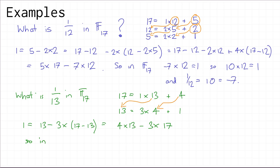So in the finite field with 17 elements, 4 times 13 equals 1 — we can ignore the minus 3 times 17 since 17 is 0. Therefore, 1 over 13 equals 4 in the finite field with 17 elements.